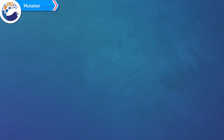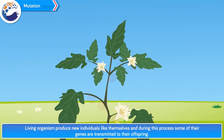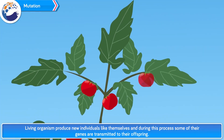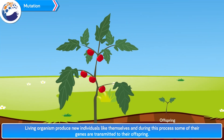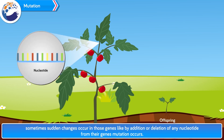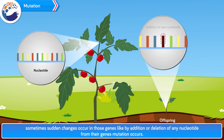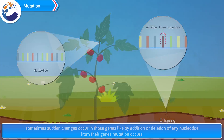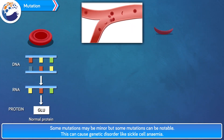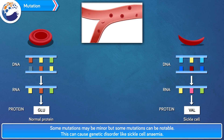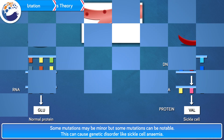Mutation: Living organisms produce new individuals like themselves, and during this process some of their genes are transmitted to their offspring. However, sometimes sudden changes occur in those genes — such as addition or deletion of any nucleotide — and mutation occurs. Some mutations may be minor but some can be notable. This can cause genetic disorders like sickle cell anemia, Down syndrome, etc.